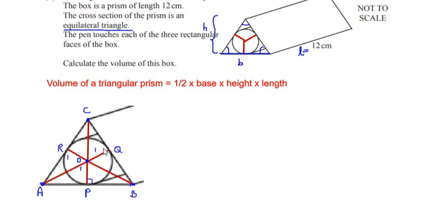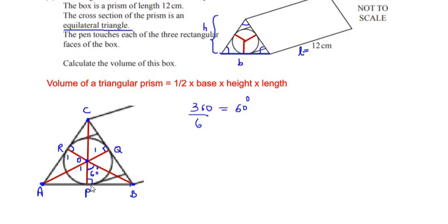AB is tangent to the radius OP, so the angle at P is 90 degrees. Similarly OQ is a radius and BC is a tangent, so the angle there is also 90 degrees, and the same applies at R. At the center O we have 360 degrees divided into 6 equal parts, giving 360 ÷ 6 = 60 degrees for each triangle at point O.